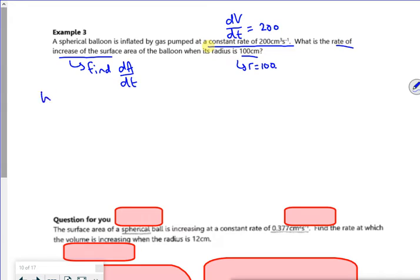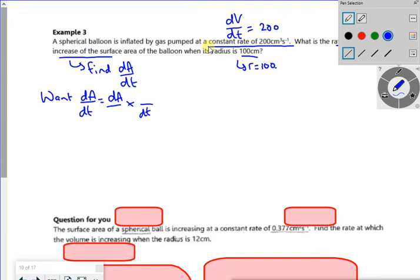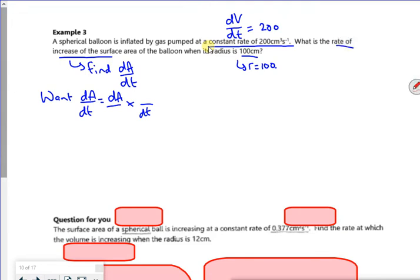So I want dA/dt, which must be dA by something times something by dt. I've got dV/dt, so that must be a V there. So I've got dV, so that must be a dV there.